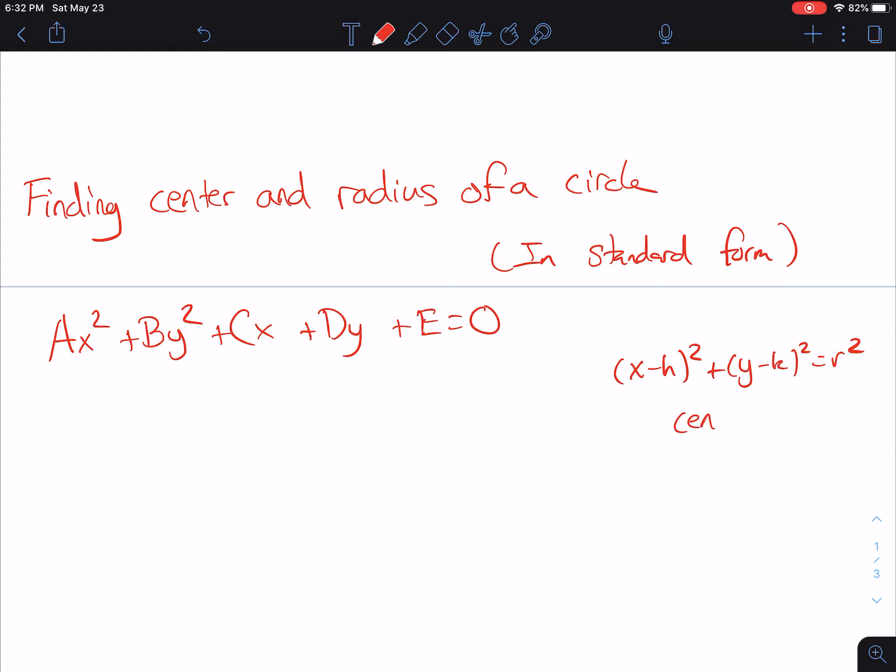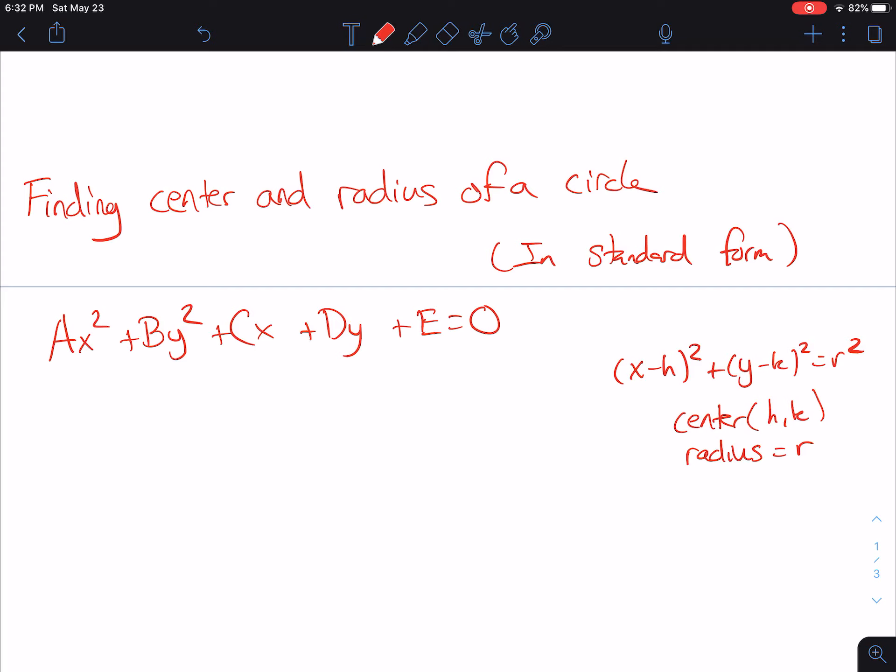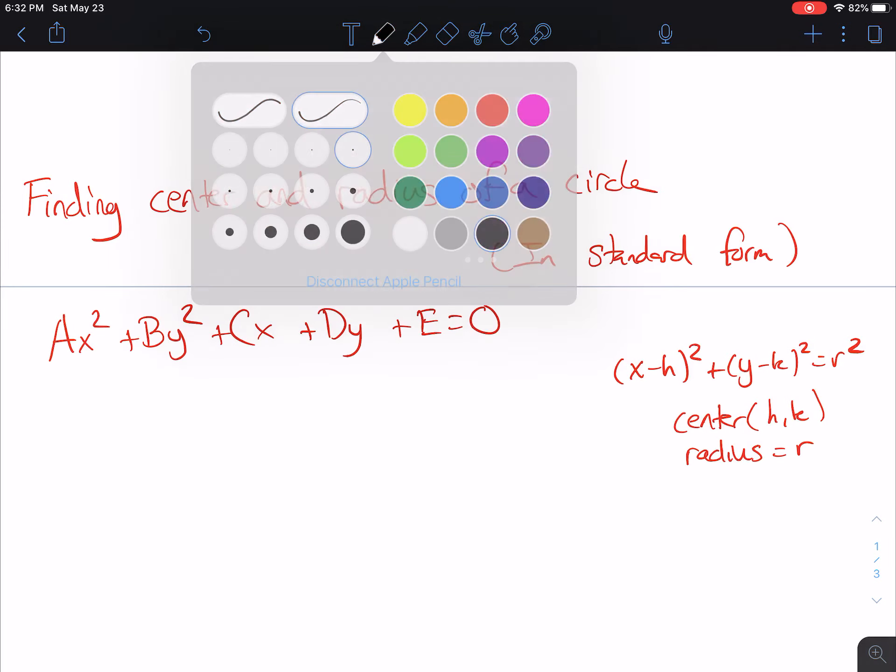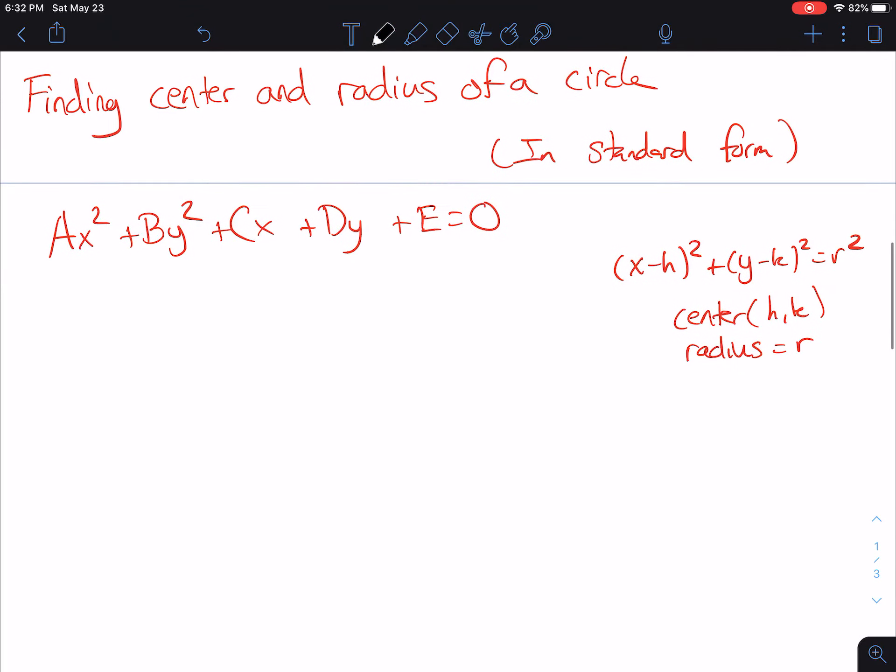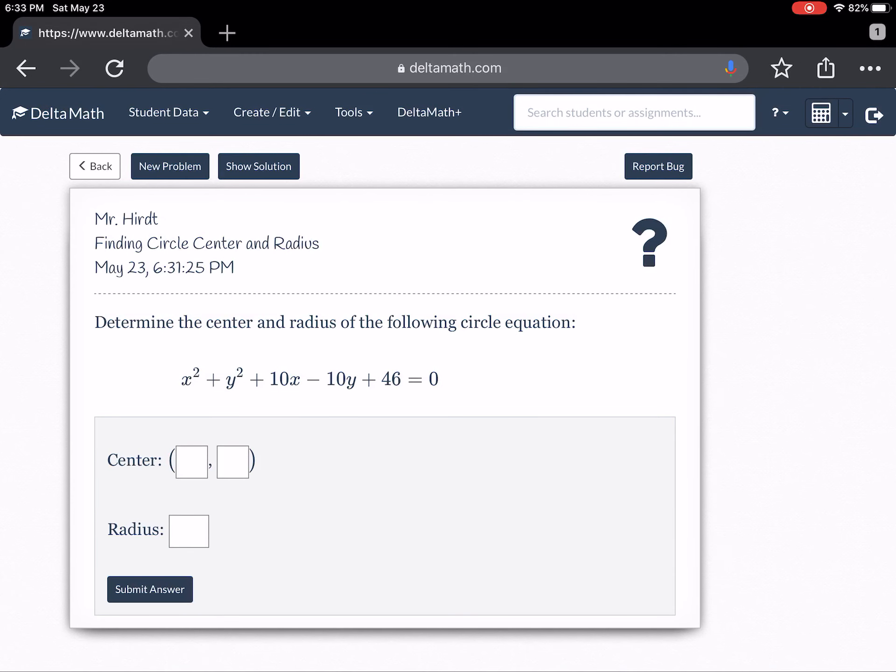here it's very easy to see the center is h comma k, the radius is r. Here, it's not simple at all to say what's the center, what's the radius. So what we're going to be learning today is how to go from standard form to center radius form so that we can easily find the center and the radius.